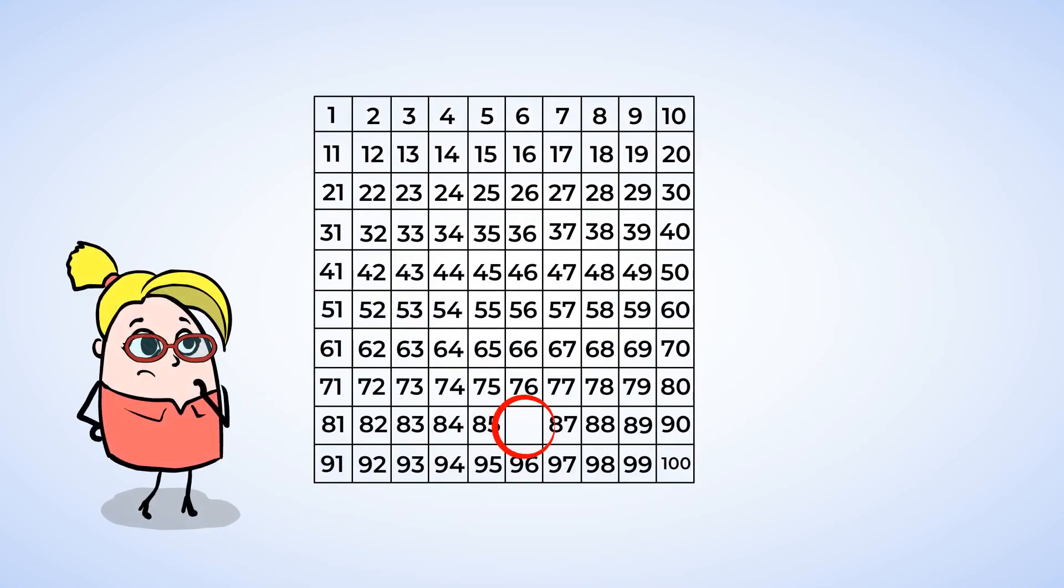Another strategy we can use is to look at the numbers above and below. These are the columns on the hundreds chart. In this column, all the numbers end with the number 1. And in this column, all the numbers end with the number 2. And so on and so on.